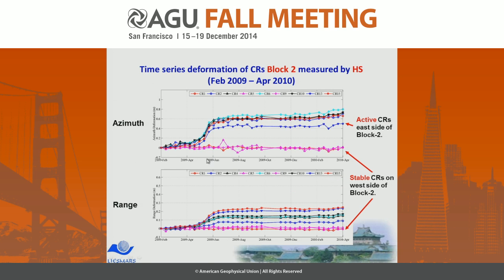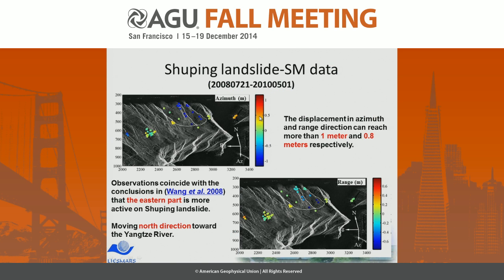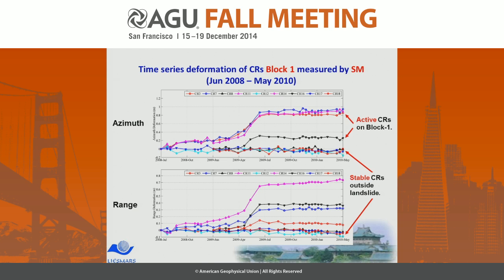This result shows the deformation distribution from block 2, also derived from the high-resolution data. We also processed another dataset and obtained a similar result with almost the same trend.